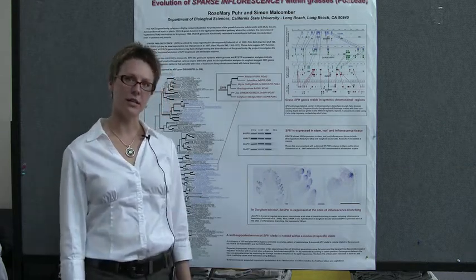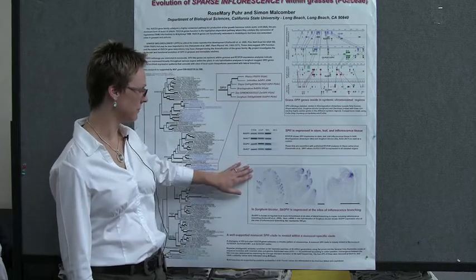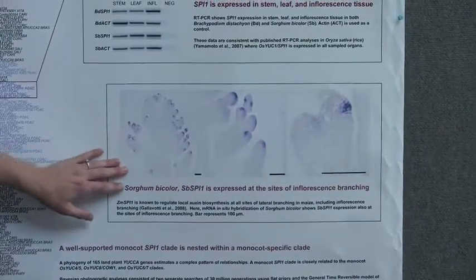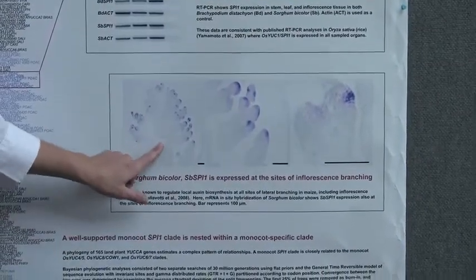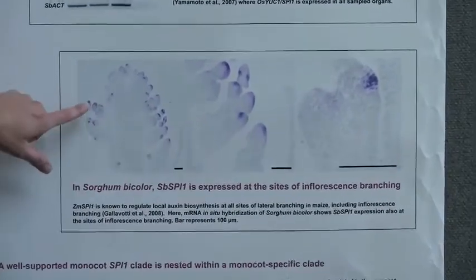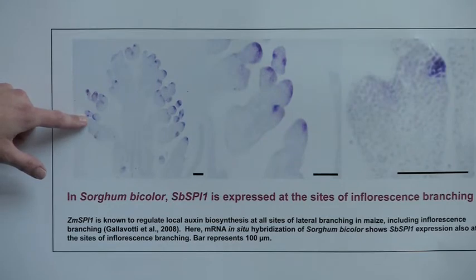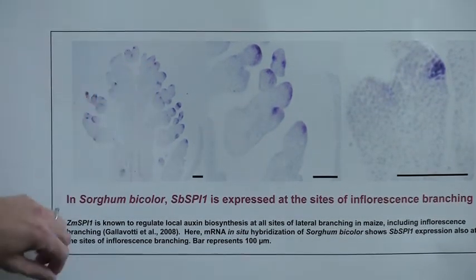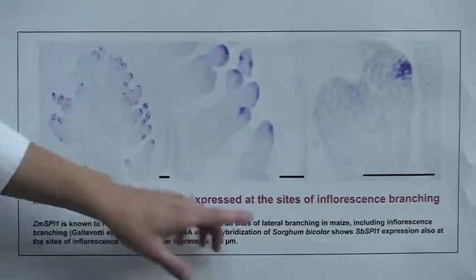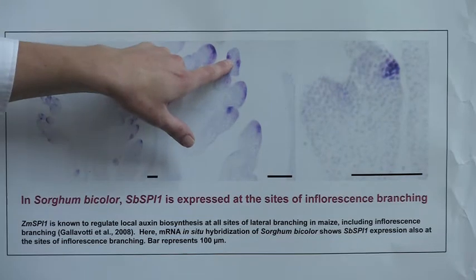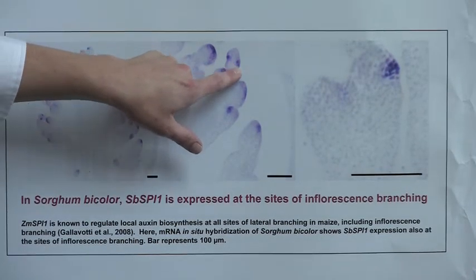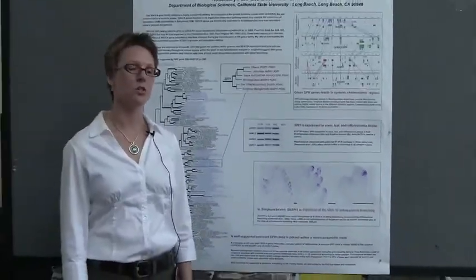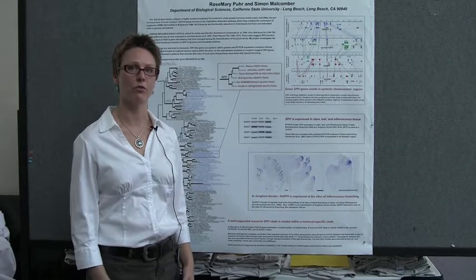But when we look a little bit closer to see exactly where it's expressed, it gets a little more interesting. What you see here is an in situ hybridization of a sorghum inflorescence — all these are inflorescence branches. The darkened areas are where SPI1 is expressed, and it's being expressed at the site of new inflorescence branches. As we get more and more magnified, we see that right where the new inflorescence branches are about to start, that's where SPI1 is being expressed, which is consistent with its role in local auxin biosynthesis — because local auxin biosynthesis is required for new organ initiation.